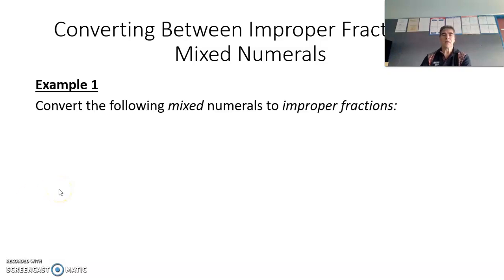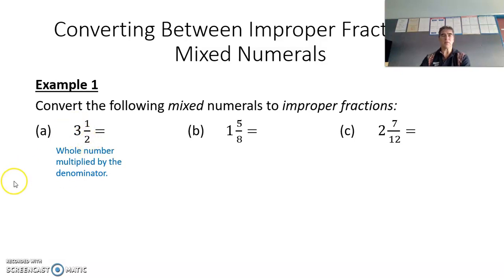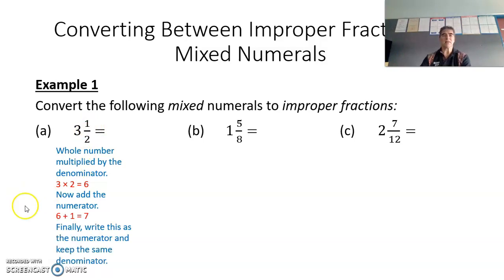Let's look at an example: convert the following mixed numerals to improper fractions. Our first one is three and a half. We take our whole number and multiply it by the denominator — three times two is six. Now add the numerator, which is one — six plus one is seven. So we have seven halves altogether. The seven becomes the numerator and the denominator stays as two. So quickly: three times two is six, plus one is seven — so seven halves.